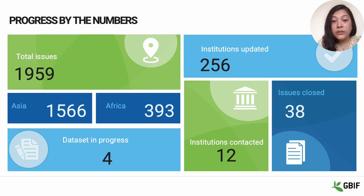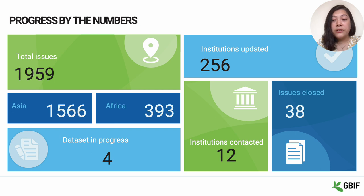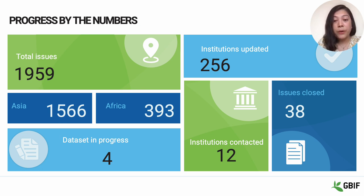Talking about the progress so far: in total, there are 1,959 issues in the collection mobilization repository in GitHub, referring to collection institutions listed in GRSciColl from Asia and Africa. Out of the total, 1,566 are from Asia and 393 are from Africa. Up until now, we have updated information for 256 institutions altogether and closed 38 of the issues, as we found they were duplicates representing the same institution. We have also established contact with 12 institutions, and based on those contacts, 4 datasets from 3 GRSciColl institutions are in progress for publishing through GBIF.